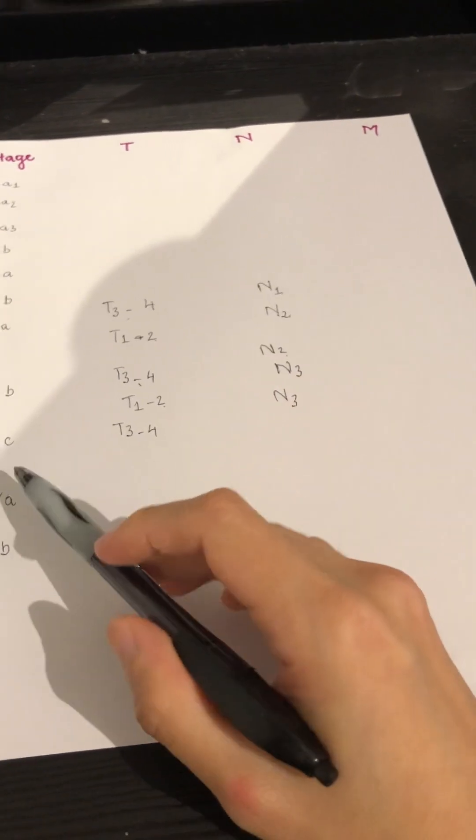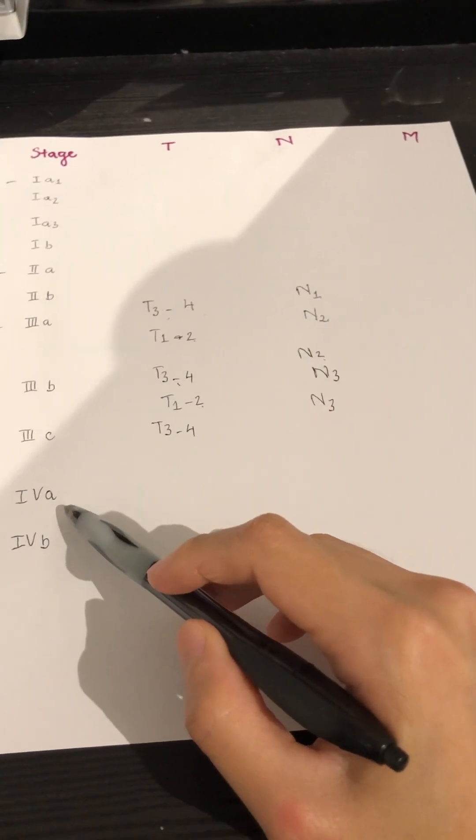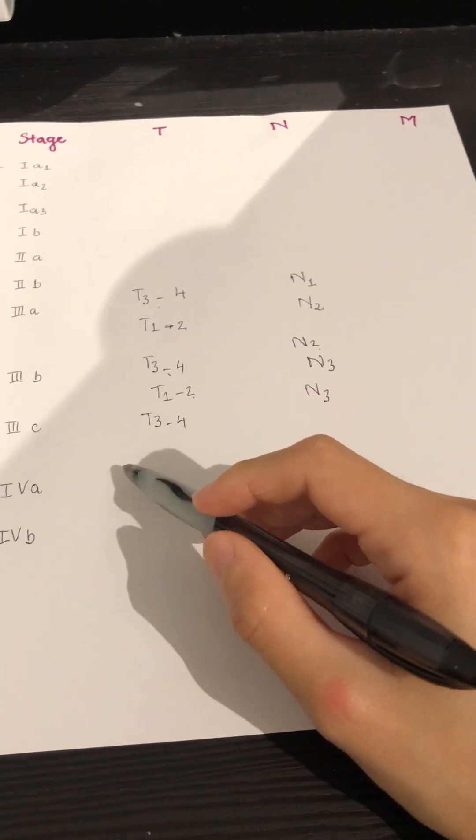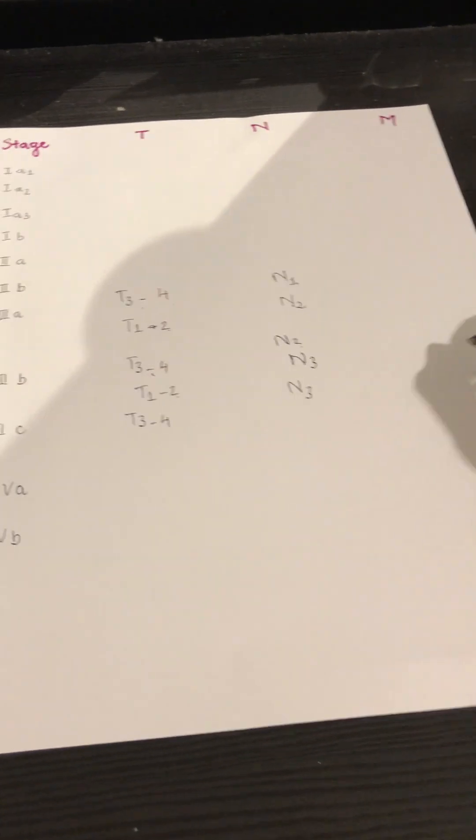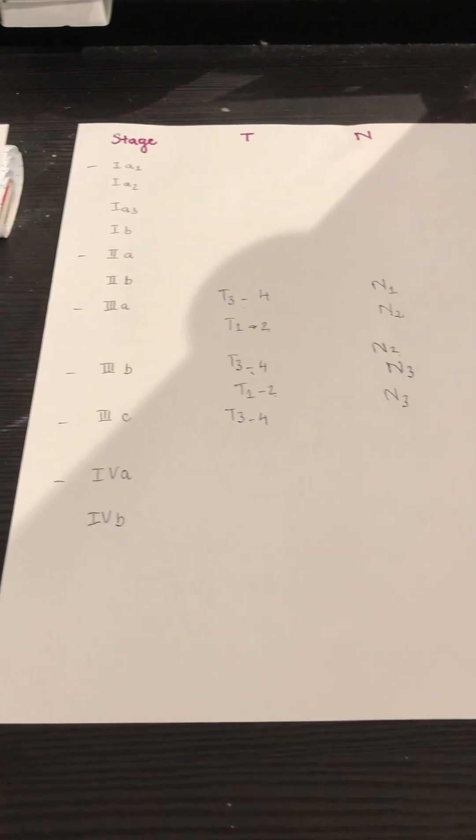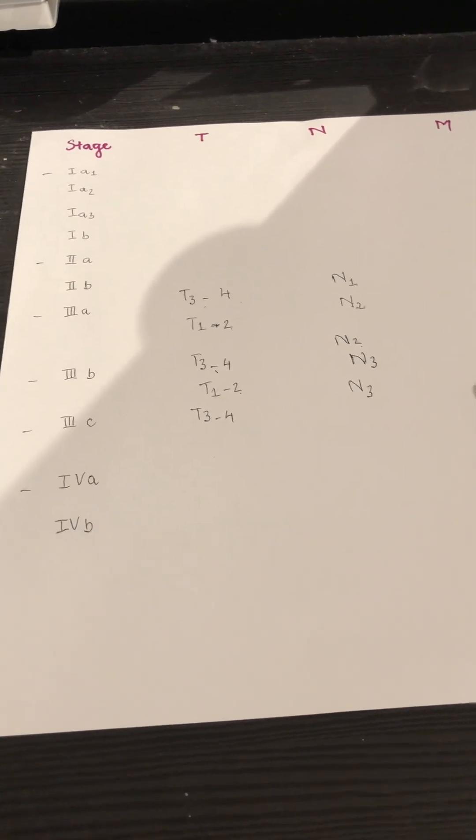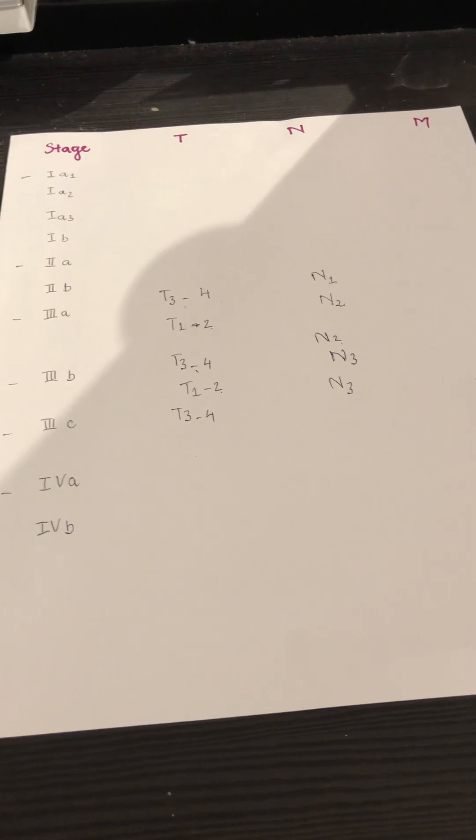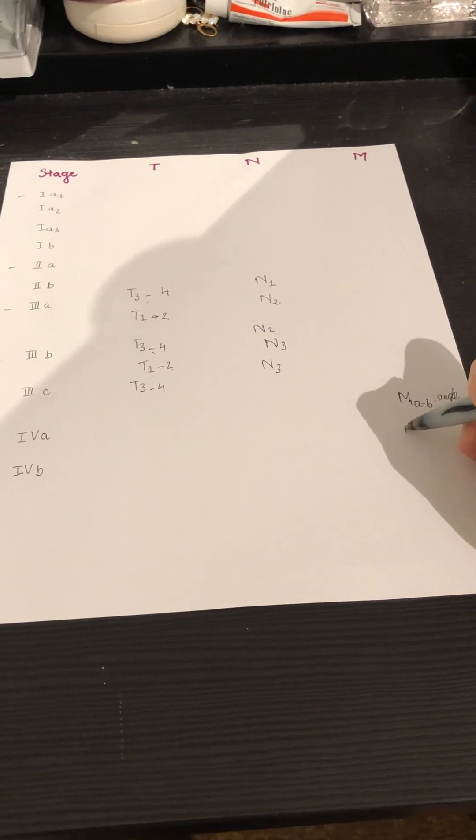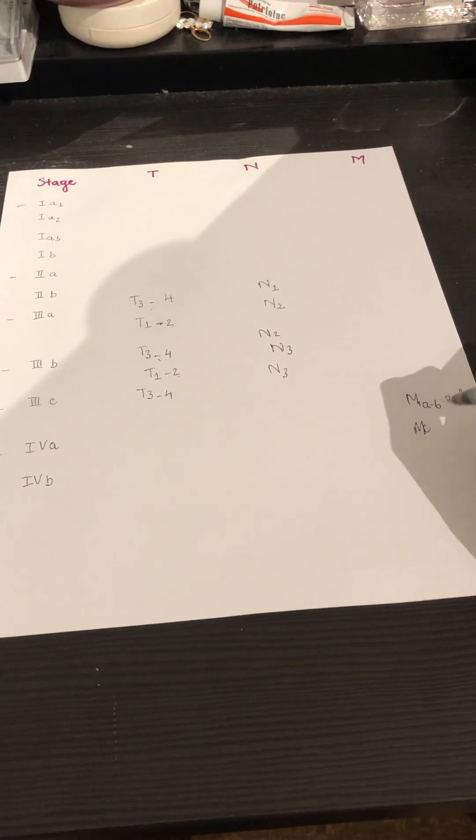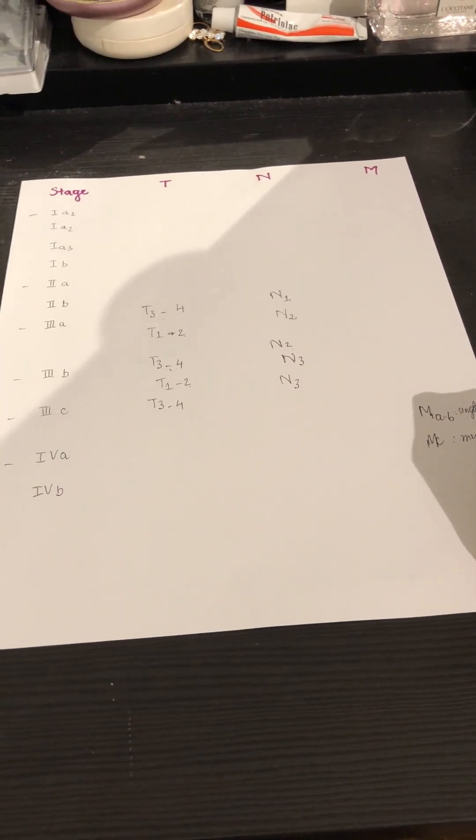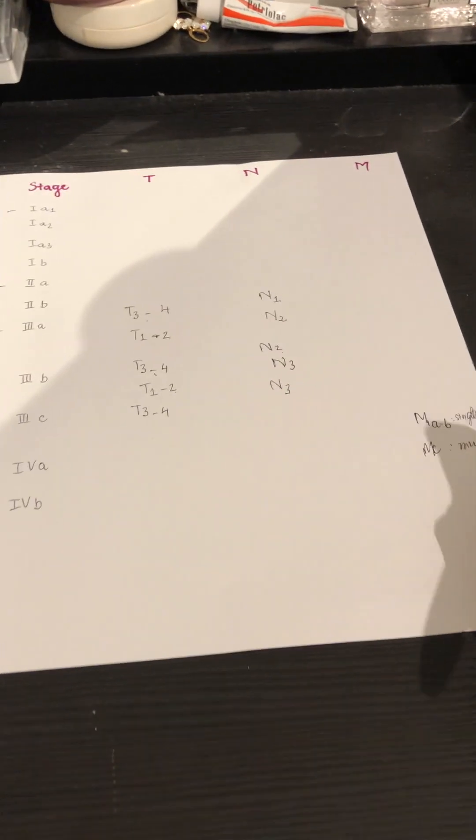And to go up to stage 4 because you cannot go up higher on the T3, so you have to go up on M. So this would be M1AB single metastasis, and M1C or multiple metastasis.